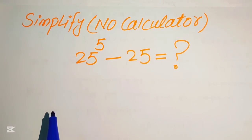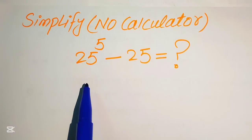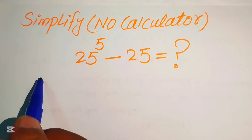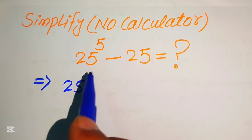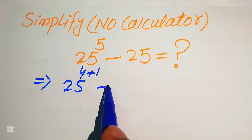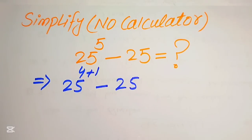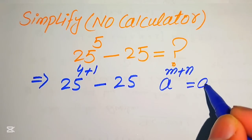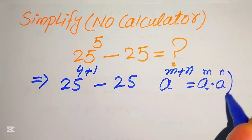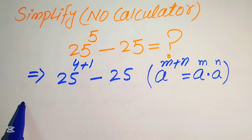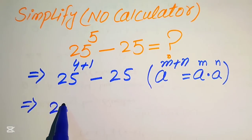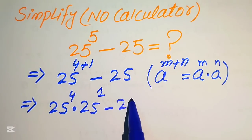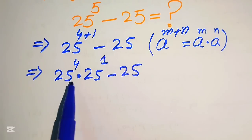The very first step is to focus on the exponent of this term. The exponent is 5, so we rewrite this by breaking 5 as 4 plus 1. We have 25 to the power of 4 plus 1 minus 25. Now we apply the exponent law: a to the power of m plus n equals a to the power of m multiplied by a to the power of n.